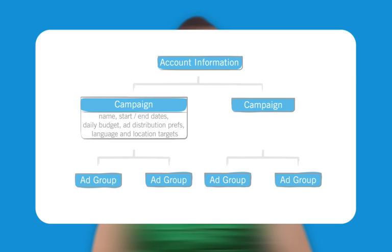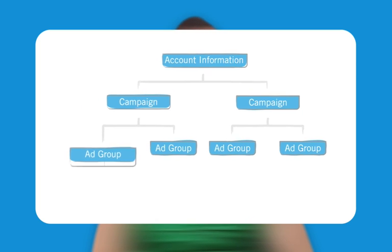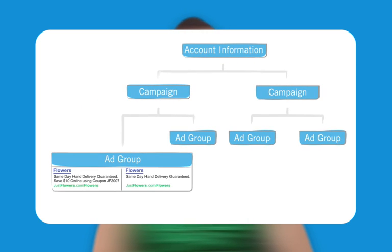There are two campaign types: keyword targeted or placement targeted. Each campaign has at least one ad group containing at least one ad and keyword or placement targeting information.